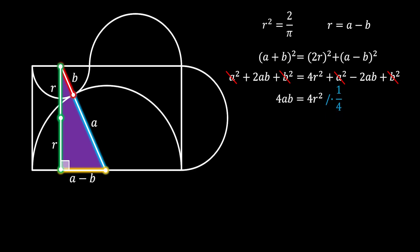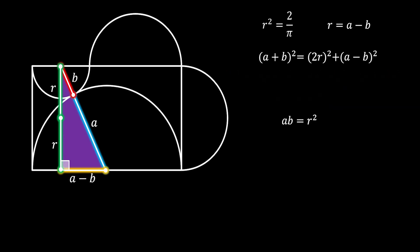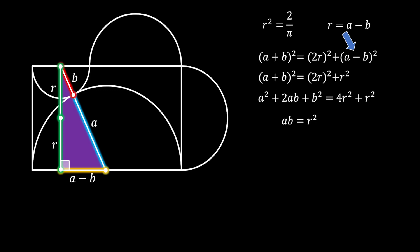We can simplify everything by 4, and we will get that A times B equals r squared. Now let's use the same Pythagorean theorem again in a slightly different way. We are going to substitute the value of A minus B for the value of r, which we got earlier. If we do this, we will get a Pythagorean theorem that looks like this. We can expand the left side using the square of a binomial again, and we will square the right side as well. Now let's substitute the value of A times B on the left side with r squared.